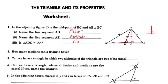How many medians can a triangle have? In this triangle with vertices A, B, C, we can draw a median from each vertex to the midpoint of the opposite side. So a triangle has three medians.